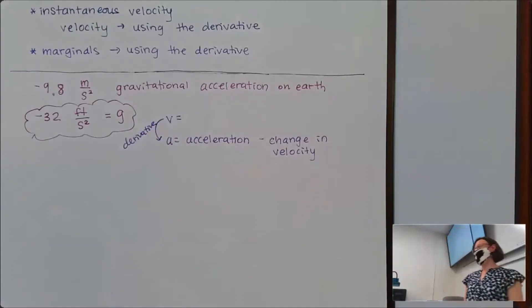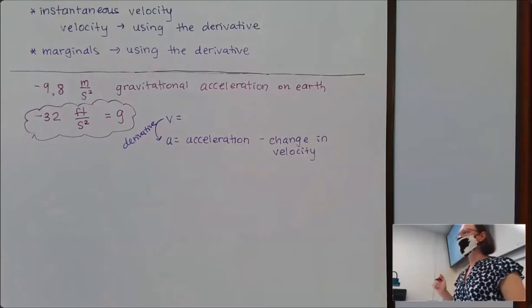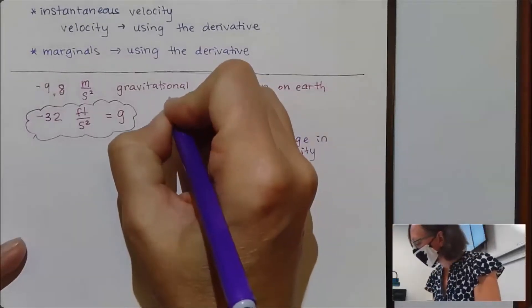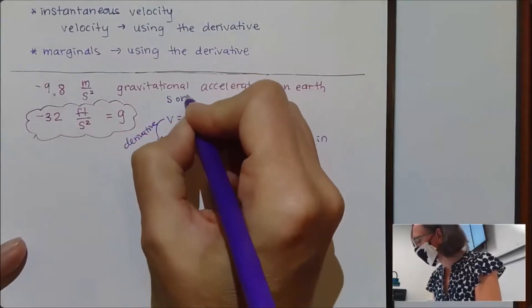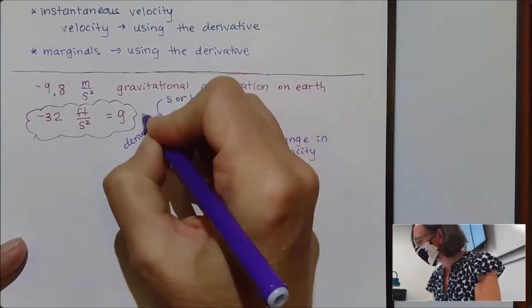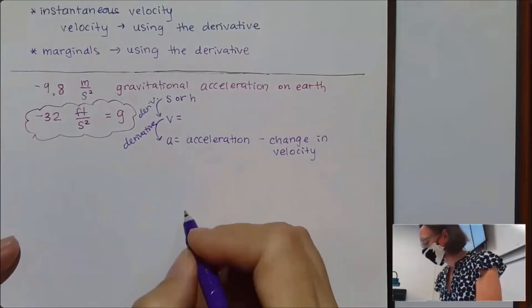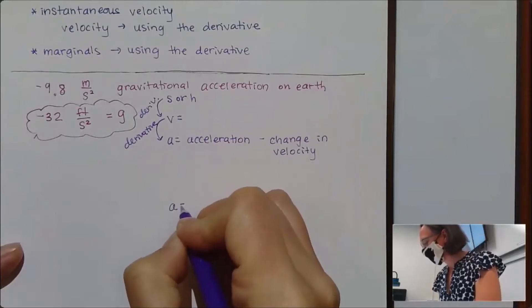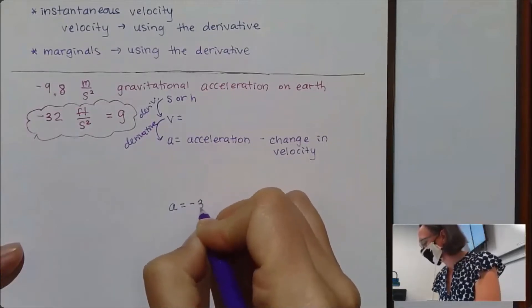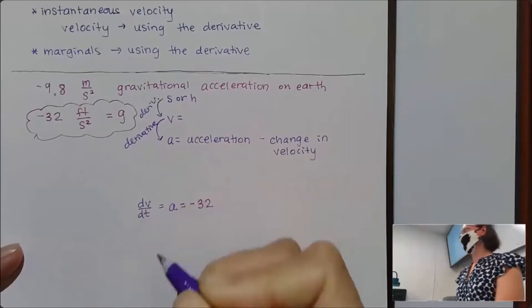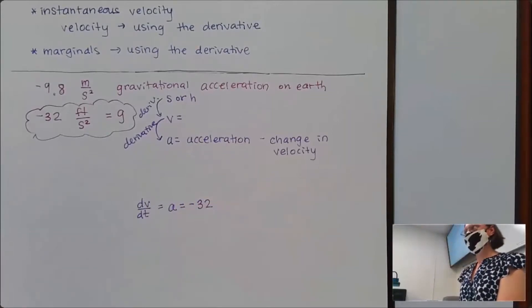Velocity is itself someone's derivative. If we have things that are falling, we call it height, but more generally we call it position, using the letter s or h. Velocity is the derivative of position. So everywhere on Earth, gravitational acceleration is the constant negative 32 feet per second squared, which is secretly the derivative of the velocity.